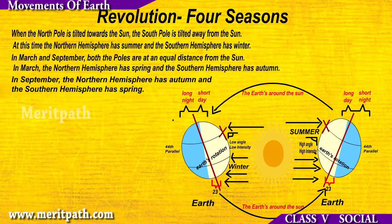In March and September, both the poles are at an equal distance from the Sun. In March, the Northern Hemisphere has spring and the Southern Hemisphere has autumn. In September, the Northern Hemisphere has autumn and the Southern Hemisphere has spring.